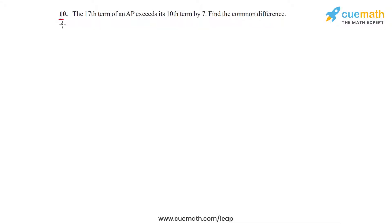The problem statement in question 10 says the 17th term of an AP exceeds its 10th term by 7. We have to find the common difference. Before I present the algebraic solution to you, I want you to visualize the key idea behind this question. I'm going to show you a figure for that.